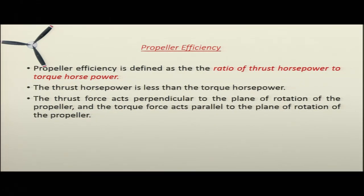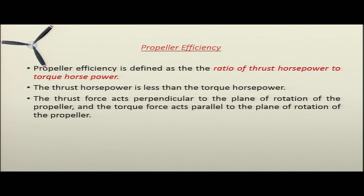Propeller efficiency is defined as the ratio of thrust horsepower to torque horsepower. The thrust horsepower is less than the torque horsepower. The thrust force acts perpendicular to the plane of rotation of the propeller, and the torque force acts parallel to the plane of rotation.